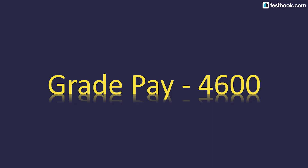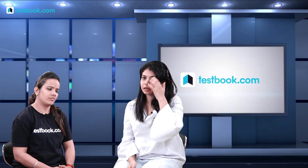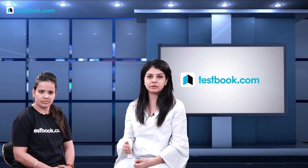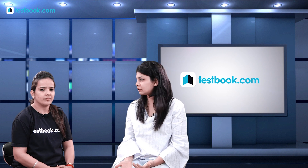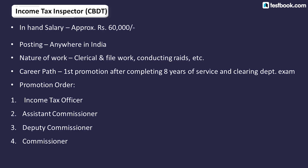Now let's talk about some posts under the 4600 grade, which are very popular among students. These include Inspector Examiner, which was under CBEC but is now under the Central Board of Indirect Taxes (CBIT), IT Inspector under CBDT, and Assistant in the Ministry of External Affairs. The Inspector under CBIC handles goods-related indirect taxes. The salary is around 55,000, with postings in coastal areas.